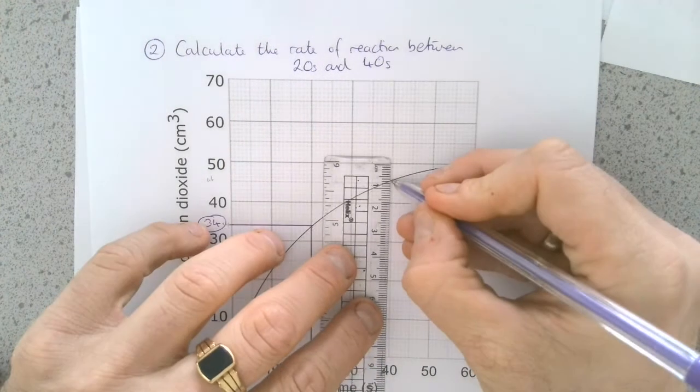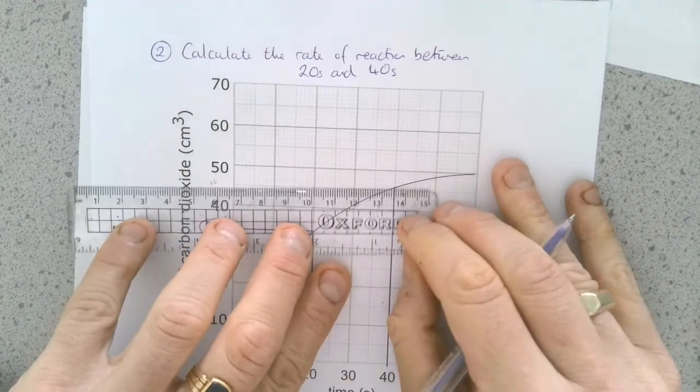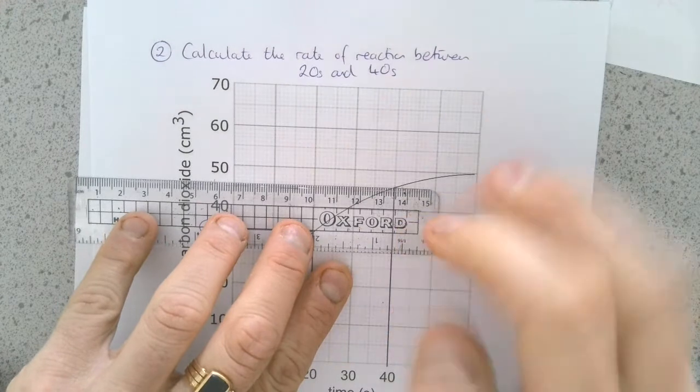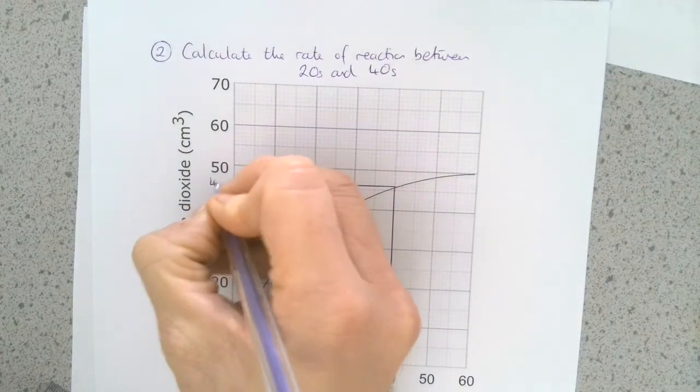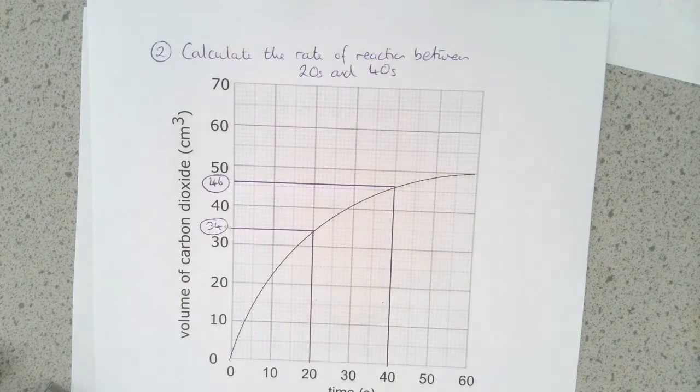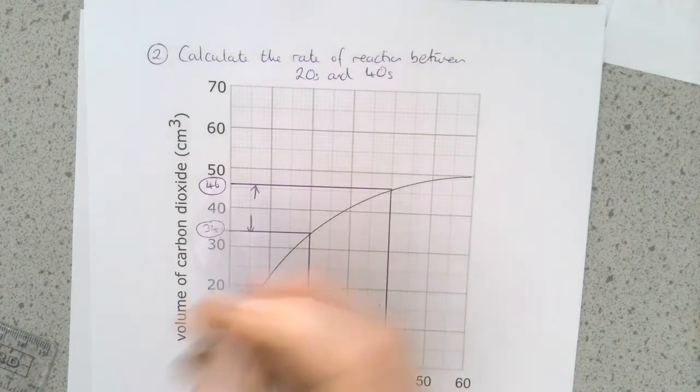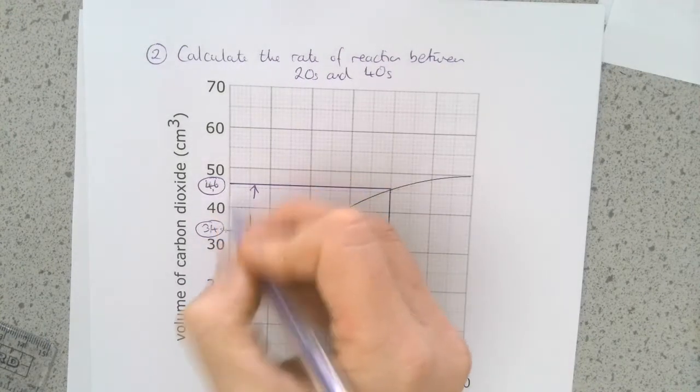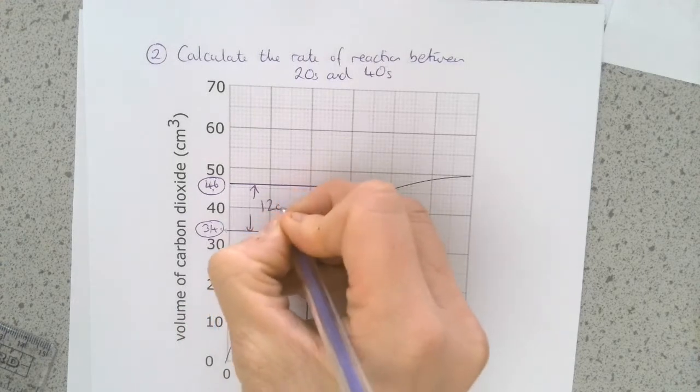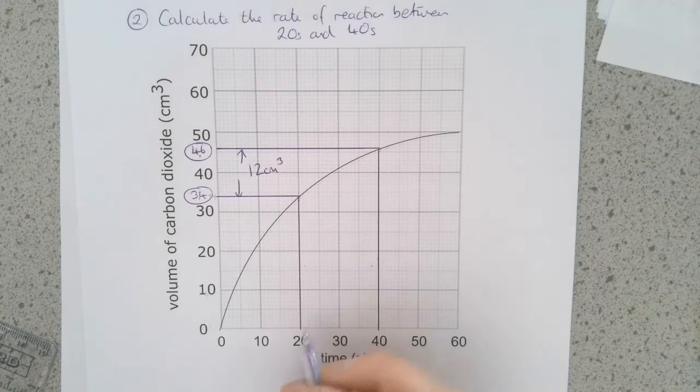And then we do the same at the 40 second point. And that will cross the line here at 46 cubic centimeters. So the difference or the change is going to be 46 minus 34, which means the amount of carbon dioxide produced in that time is 12 cubic centimeters.